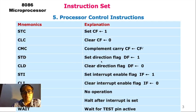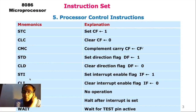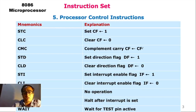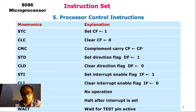Set the direction flag to 1, clear to 0. STI sets the interrupt flag to 1, and CLI clears the interrupt flag to 0. NOP means no operation, HLT is halt, and WAIT is for the test pin activity.